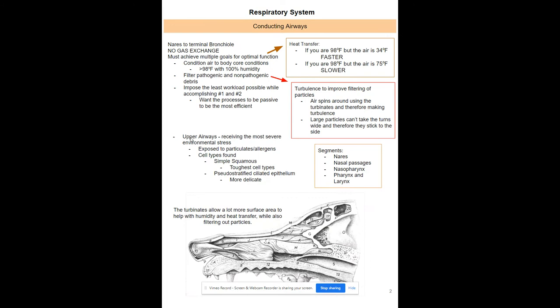Your conducting airways run from your nares all the way down to your larynx. You have upper airways — nares, larynx, nasal cavity, oral cavity — and lower airways. In the upper airway area, no gas exchange occurs at all.